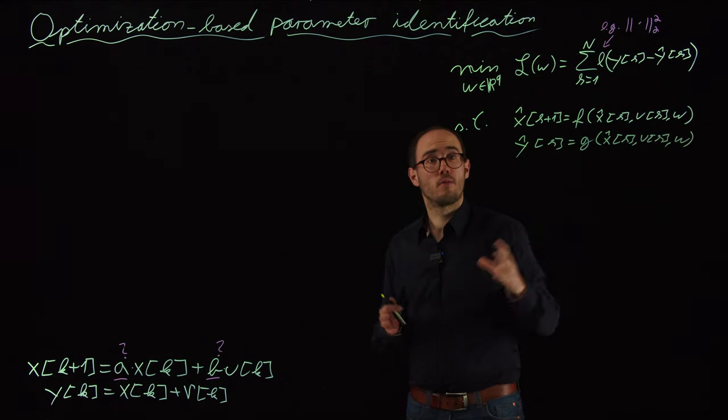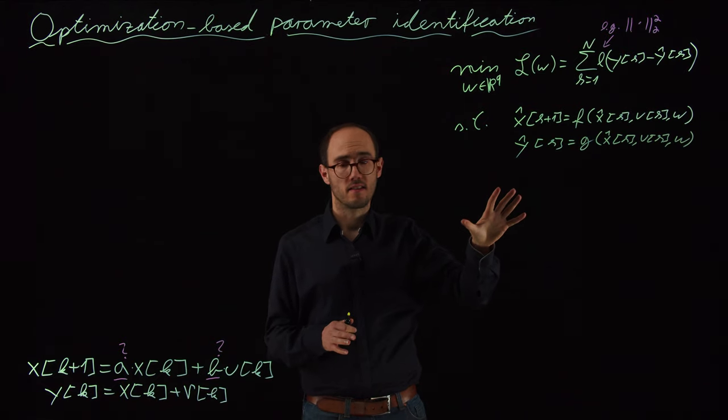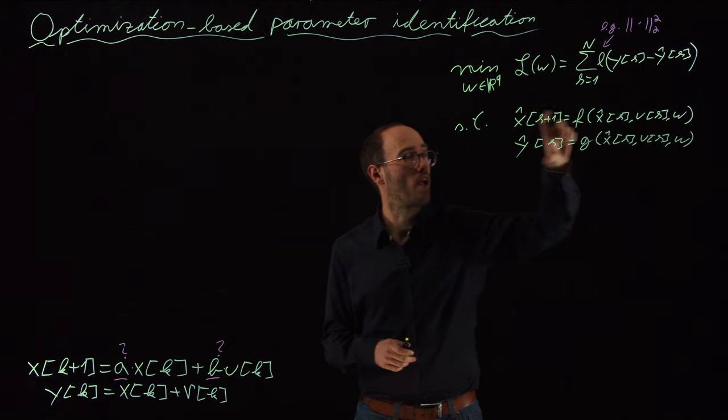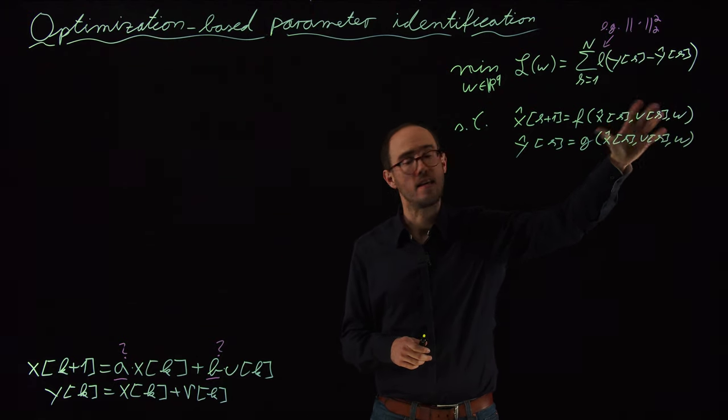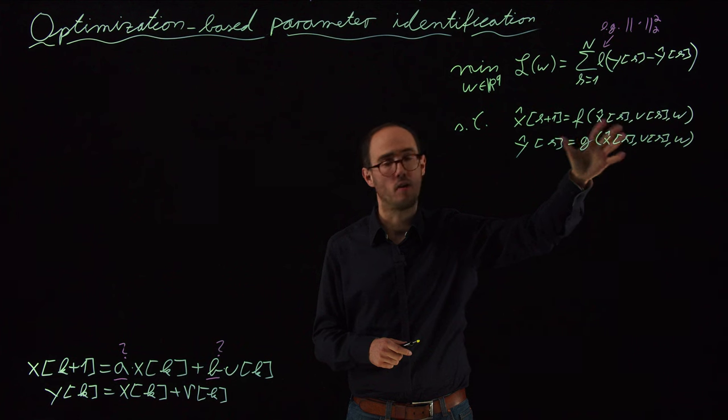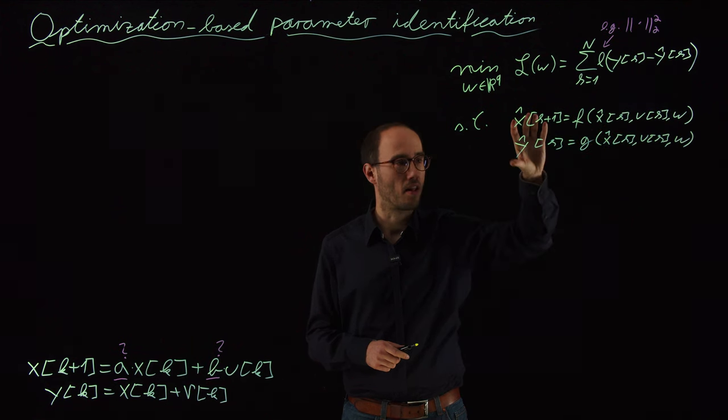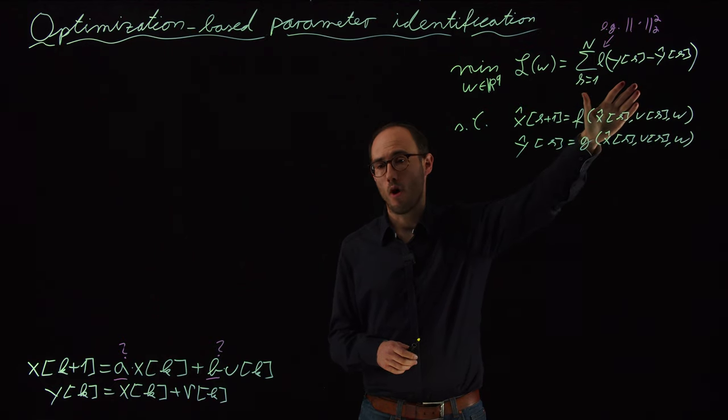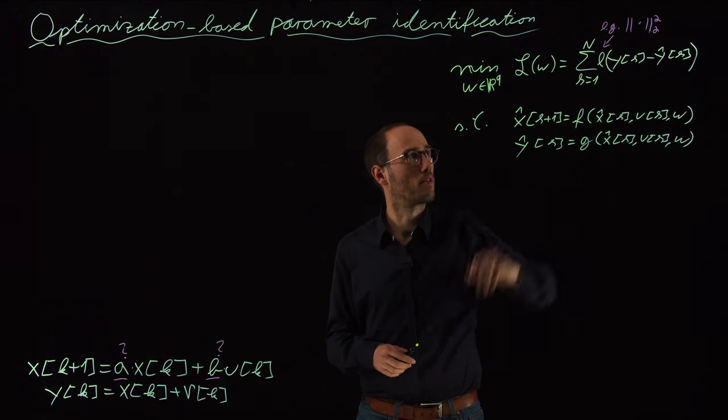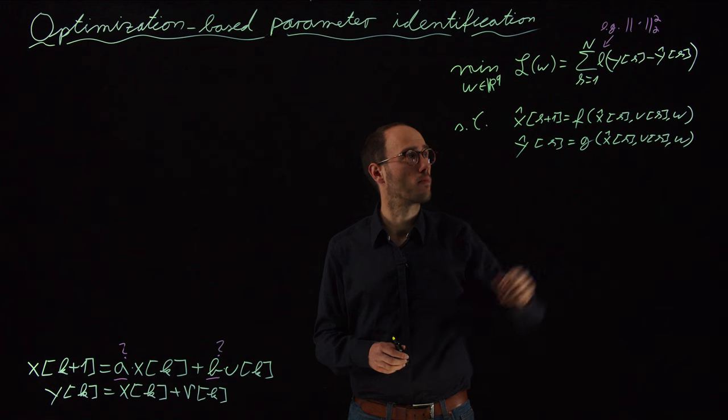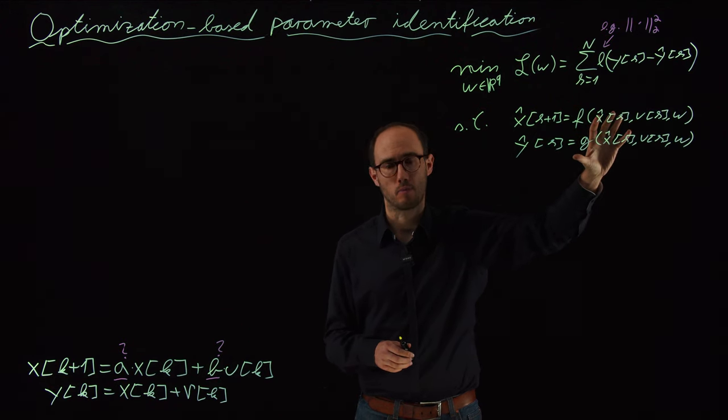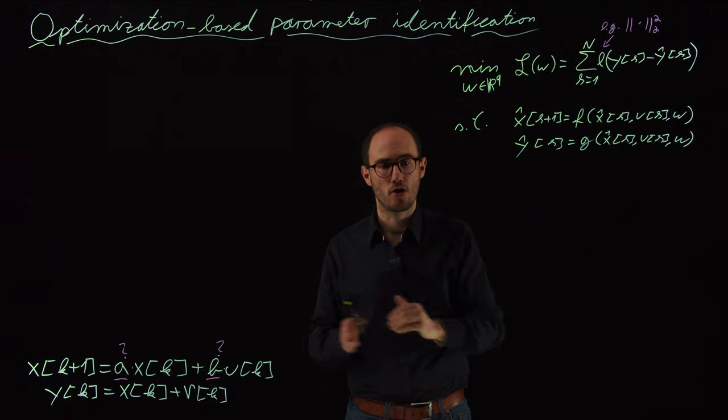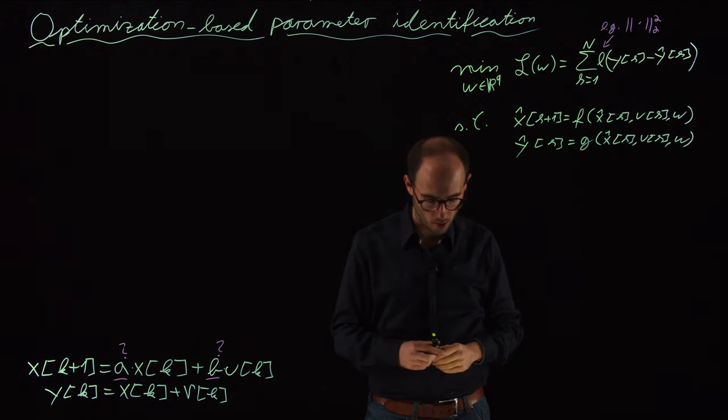So what we have basically now combined is the two basic elements of the previous lecture series: we have a definition of our model—I use discrete time notation, however we will also see that this can be continuous time notation—and we do some optimization approach, for example using the squared Euclidean distance between measurements and modeled system outputs. So we are basically combining now optimization and dynamic modeling tools.